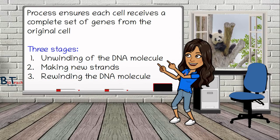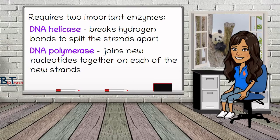There are three stages to semi-conservative replication. The first stage is where DNA unwinds from its double helix structure in small bubbles in different locations of the DNA. The second is the making of new strands, and the third is a rewinding of the DNA molecule. The entire process needs two very important enzymes: DNA helicase, which has the role of breaking the hydrogen bonds between the bases, and DNA polymerase, which joins two nucleotides together on new strands. I will touch on both of these later in the video, but first I want to go through the process of replication.